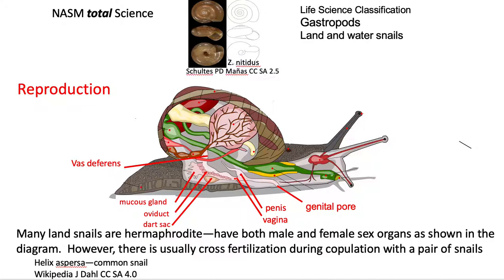Reproduction: many land snails are hermaphrodite. They have both male and female sex organs, as you can see in the diagram. But there is usually cross-fertilization during copulation between a pair of snails.